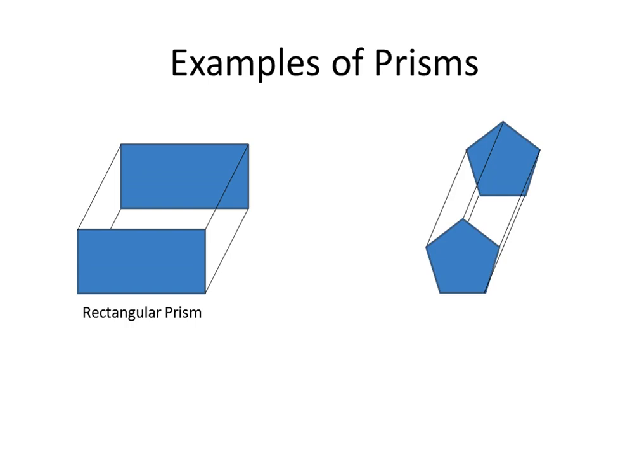Next, we have this shape, this prism, and the two bases would be a pentagon, the shape of a pentagon. And therefore, we would be naming this prism a pentagonal prism.